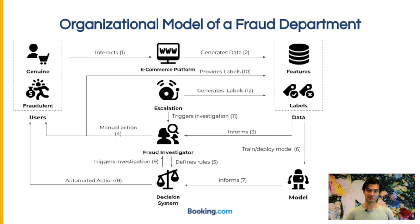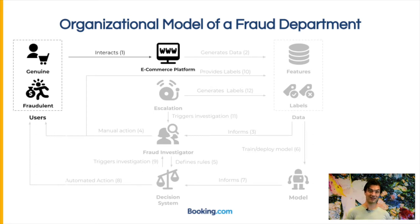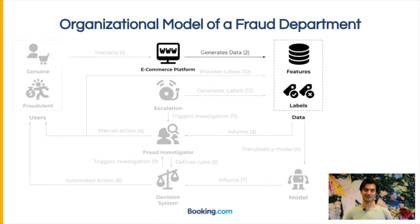Here is the organizational model that we came up with. On the left side you see the users of the platform. There are genuine users and there are fraudulent users who are out there to make money out of the platform in all kinds of shady and dubious ways. There is at the top in the middle the e-commerce platform itself. The users interact with the platform by browsing, clicking around, making purchases, registering their account, or interacting in all kinds of different ways. While they interact with the platform, all kinds of data gets recorded and ends up in different databases in the organization. From this data we can derive features that we can later use to determine which users were fraudulent and which were not.